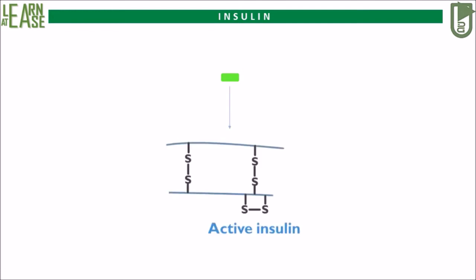Insulin is a peptide hormone and it possesses two peptides linked to one another by two disulfide linkages. Peptide A is 21 amino acids long and peptide B is 30 amino acids long. Peptide A has one intra-chain disulfide linkage as well. Thus, the active insulin molecule has three disulfide linkages, of which two are inter-chain and one is intra-chain.